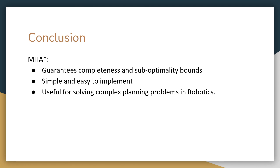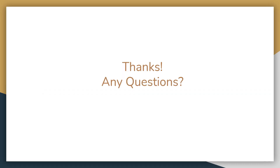In conclusion, MHA star uses multiple inadmissible heuristics to simultaneously explore the search space while preserving guarantees of completeness and suboptimality bounds using a consistent heuristic. The approach is simple, easy to implement, and very powerful, and is useful for solving complex planning problems in robotics and other domains. This was the presentation about multi-heuristic A star. Thank you.